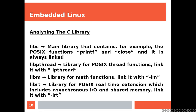Analyzing the C library: libc is the main library that contains, for example, the POSIX functions like print and close, and it's always linked — you don't need to link it manually. libpthread is the library for POSIX thread functions; link it with -lpthread, so basically minus-l plus the name of the library. libm is the library for math functions. librt is the library for POSIX real-time extensions, which includes asynchronous I/O and shared memory.